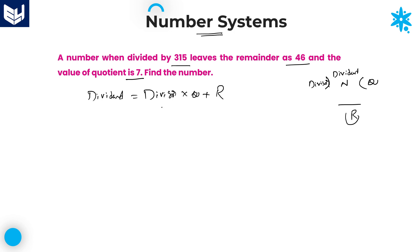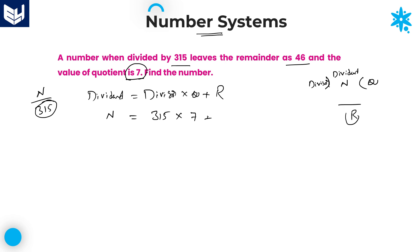Dividend is equal to divisor into quotient plus remainder. Here, dividend is the number which we want to find. That number is equal to divisor — a number is divided by 315, so 315 is called as divisor — into quotient. The value of quotient is given as 7, plus remainder is given as 46.